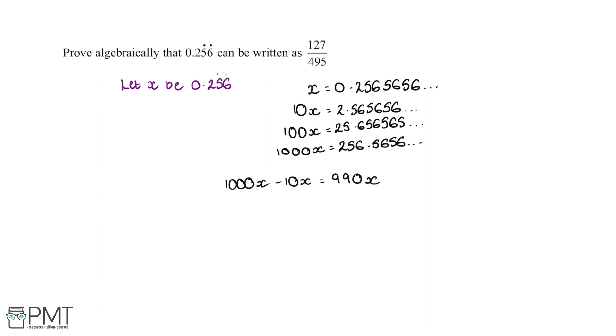So now we can substitute in the values of 1000x and 10x. So 1000x is equal to 256.56 reoccurring, and 10x is equal to 2.56 reoccurring.